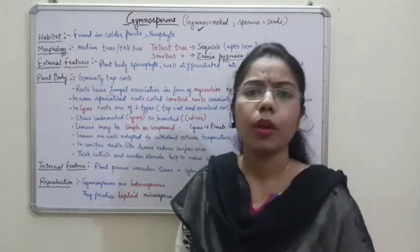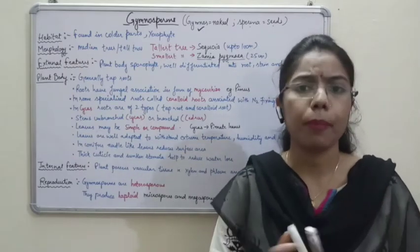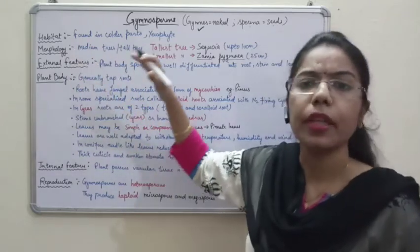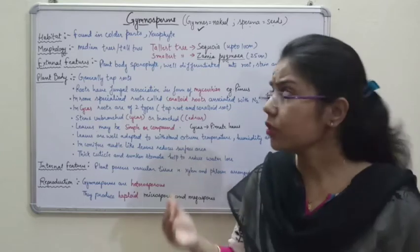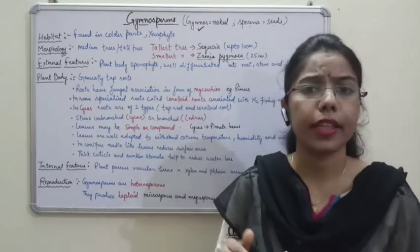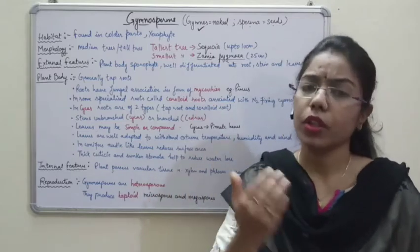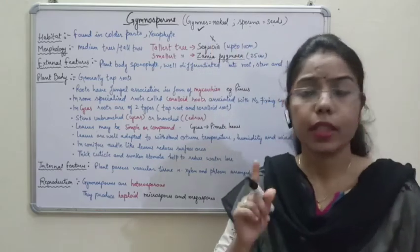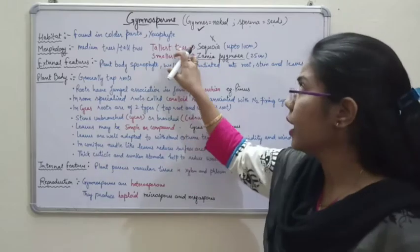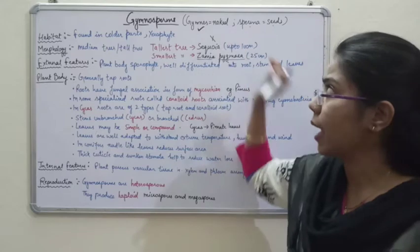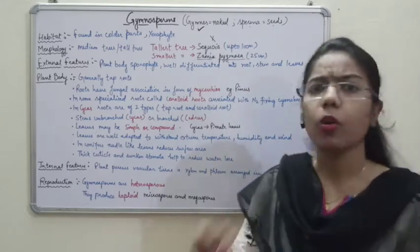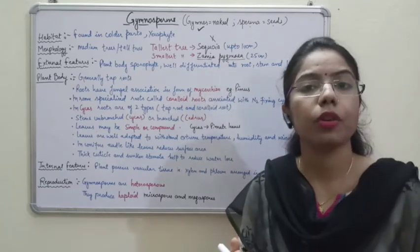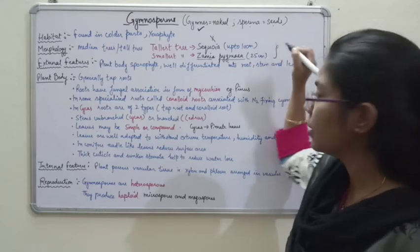Another characteristic is morphology — the outer appearance of a plant. The trees can be medium or tall. Most of the trees that come under gymnosperm — their height can be very tall or some can be medium. One important example from your NCERT is Sequoia, which is the largest gymnosperm or the largest tree and its height can be up to 100 meters. Comparatively, the smallest tree is Zamia pygmia, which can be up to 25 centimeters in height.